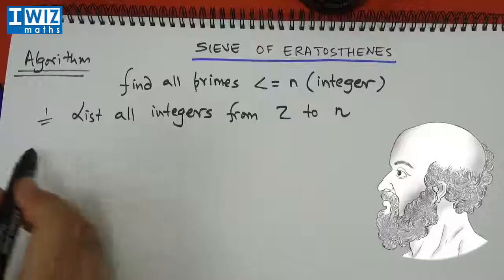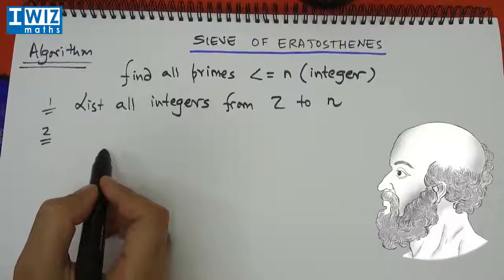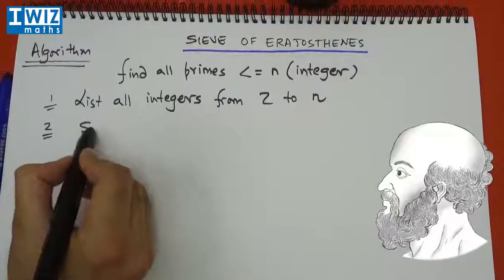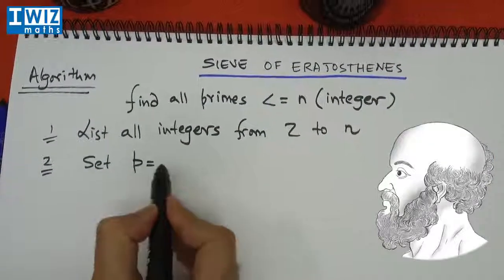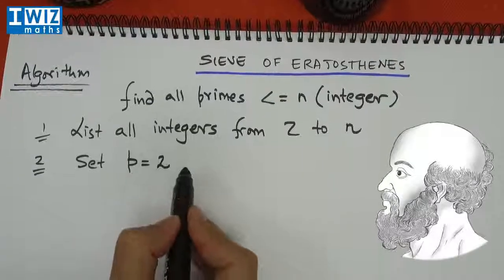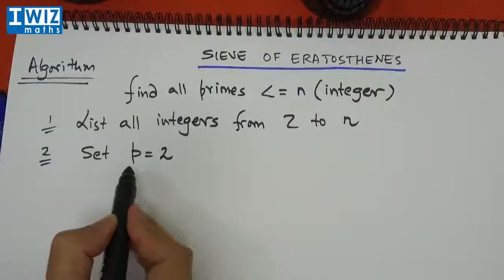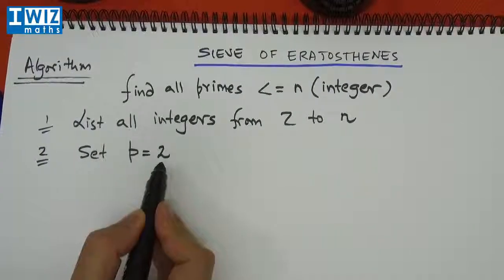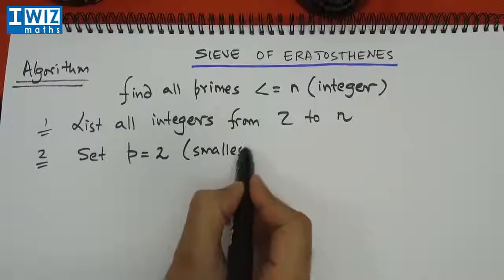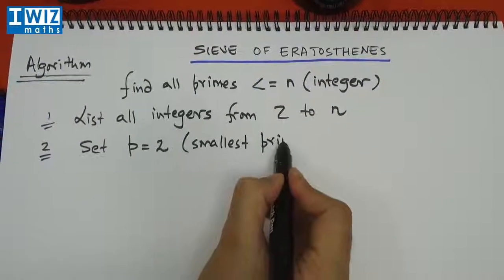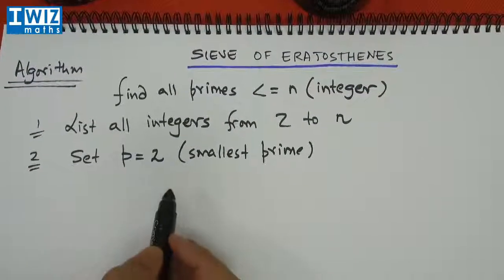The second step is a bit of an initialization step where we set p, p is a parameter, we set p to be equal to 2. We're choosing p because p also denotes a prime. So we set p equal to 2 and 2 is the smallest prime number.